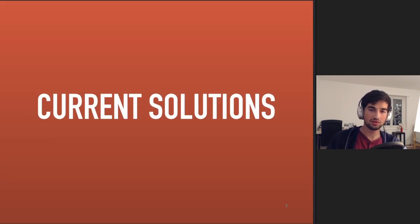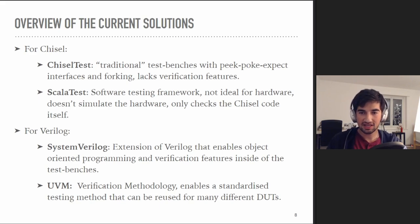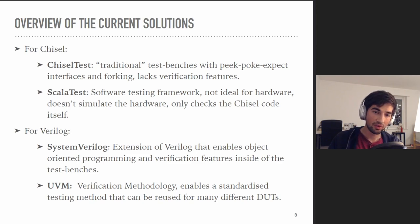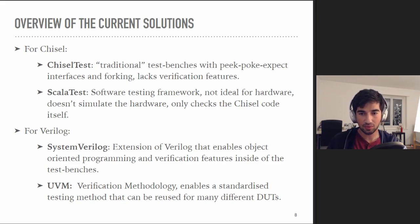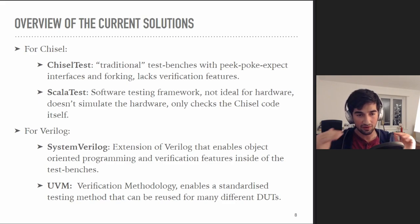This brings us to the current solutions for verifying Chisel designs. Chisel designs can be tested using essentially two main approaches: either testing the Chisel code or testing the output Verilog. When it comes to testing the Chisel code, we mostly have two main options: ChiselTest, which is great for more traditional test benches that rely on setting inputs and comparing outputs to the golden model, or ScalaTest, which is really just a Scala testing framework that allows us to test Chisel code as if it were Scala software.